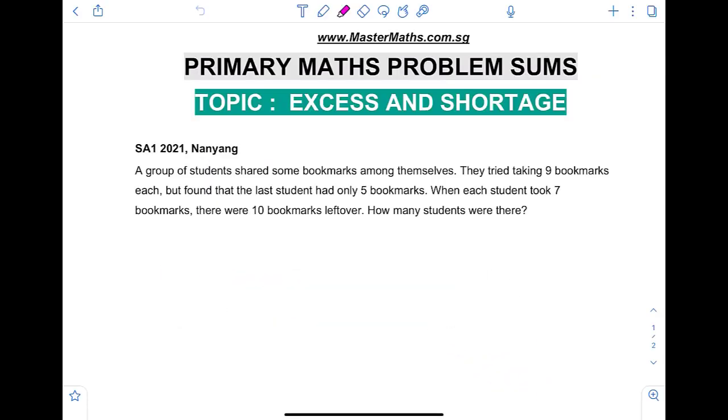A group of students shared some bookmarks among themselves. They tried taking nine bookmarks each, but found that the last student had only five bookmarks. In other words, there's a shortage of bookmarks. The last student is supposed to get nine also, but he only had five, which means it's a shortage of four bookmarks.